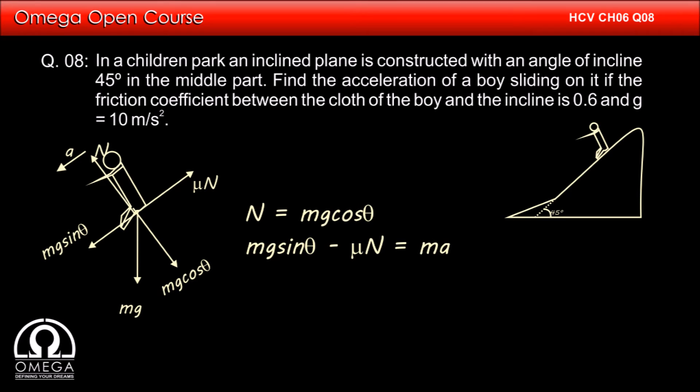Now, net force down the incline must be equal to mass into acceleration. Therefore, mg sin theta minus mu n is equal to ma. Putting the value of n, we get mg sin theta minus mu mg cos theta is equal to ma, which implies a is equal to g sin theta minus mu g cos theta.